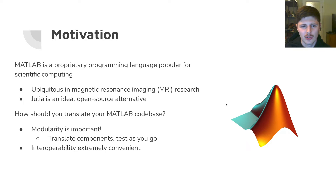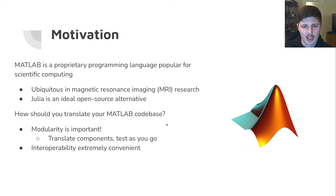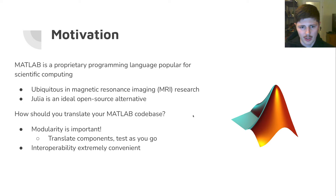Suppose you do want to make this switch to Julia — how should you translate your MATLAB code base? I would argue that modularity is extremely important. You don't want to take a gigantic code base and translate it all at once; that's not efficient, scalable, or error prone. You want to take isolated components, translate them, and test as you go. And in doing so, interoperability is extremely convenient — if you can swap out one part for Julia with minimal overhead, call out to Julia for that part, and keep going in your MATLAB routine, it makes it much easier to slowly switch over rather than all at once.